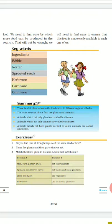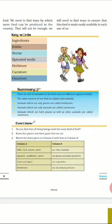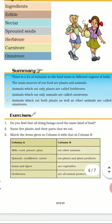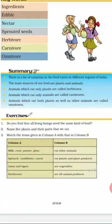'Sprouted seeds' are those seeds in which the roots have started to grow when they are kept in water overnight. Herbivore animals eat only grass, carnivore animals eat other animals, and omnivore animals can eat grass as well as other animals. You have to learn these definitions: animals that eat only plants are herbivores, animals which eat only animals are carnivores, and animals which eat both plants and animals are called omnivores.